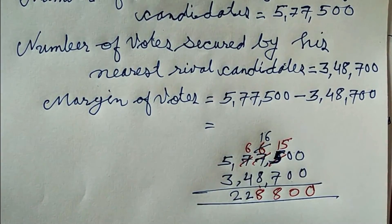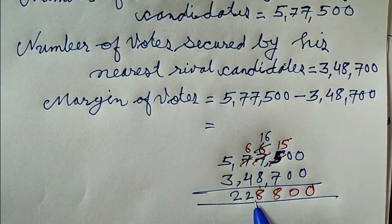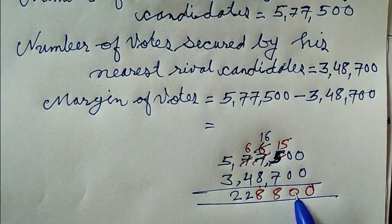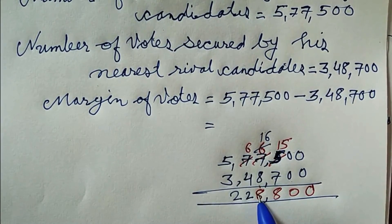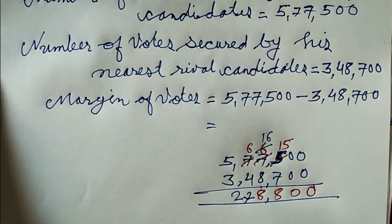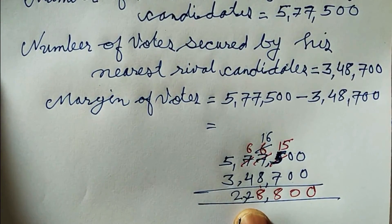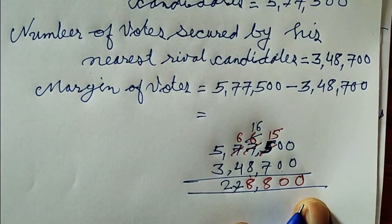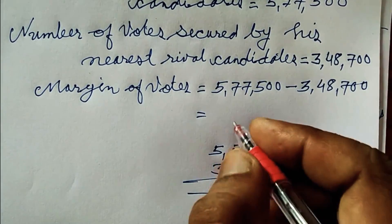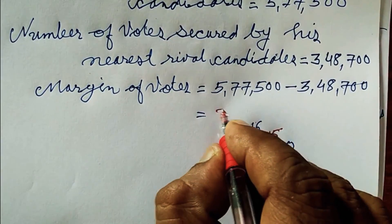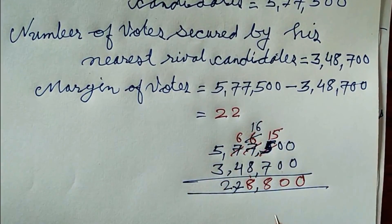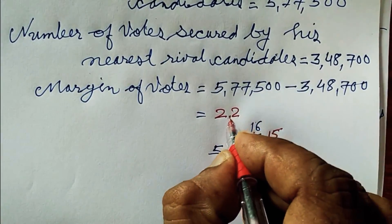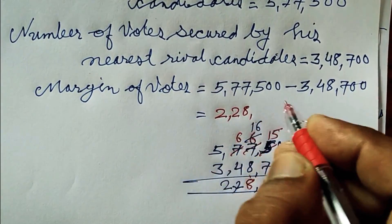So the answer will be two lakhs 28,800 votes. The margin of victory is two lakhs 28,800.